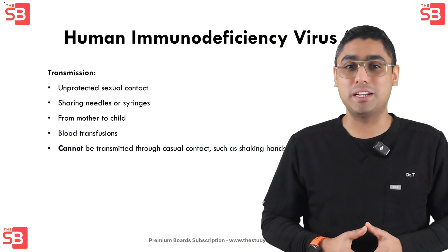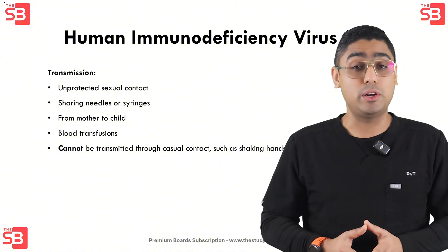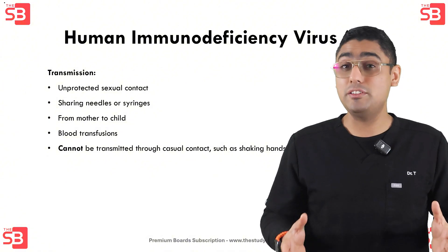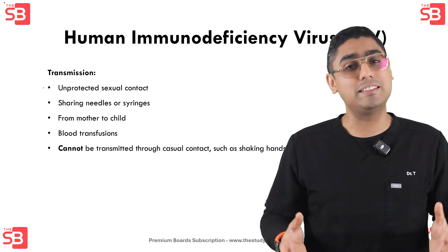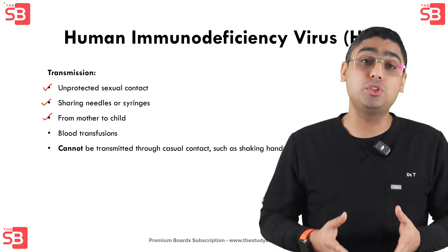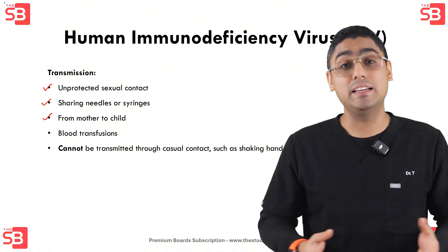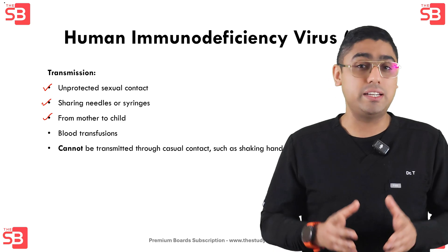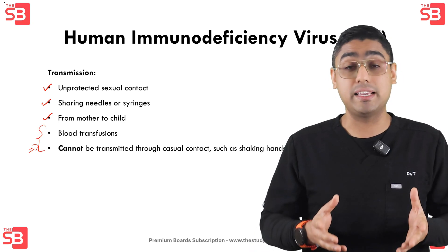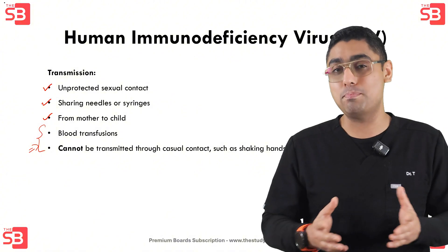Let's look into transmission now. HIV can be found in several body fluids including blood, semen, vaginal fluids and breast milk, and it can spread through unprotected sexual contact, sharing needles or syringes, and from mother to child during pregnancy, childbirth or even breastfeeding. It's important to remember that HIV is not transmitted through casual contact — actions like hugging, shaking hands or sharing food are completely safe.